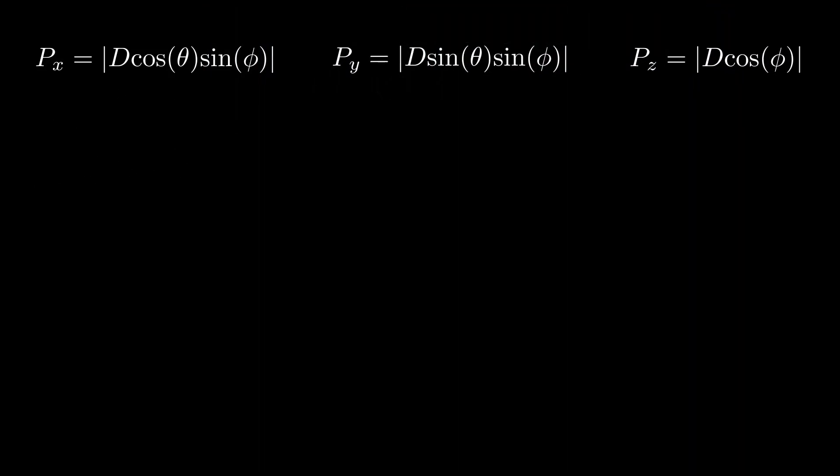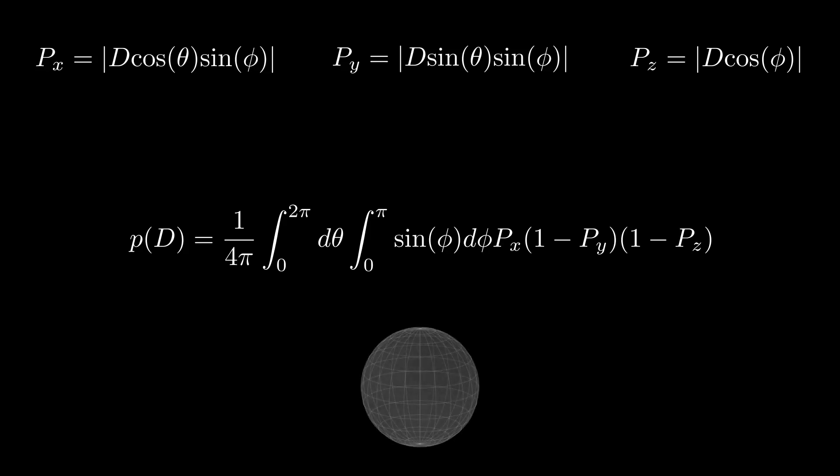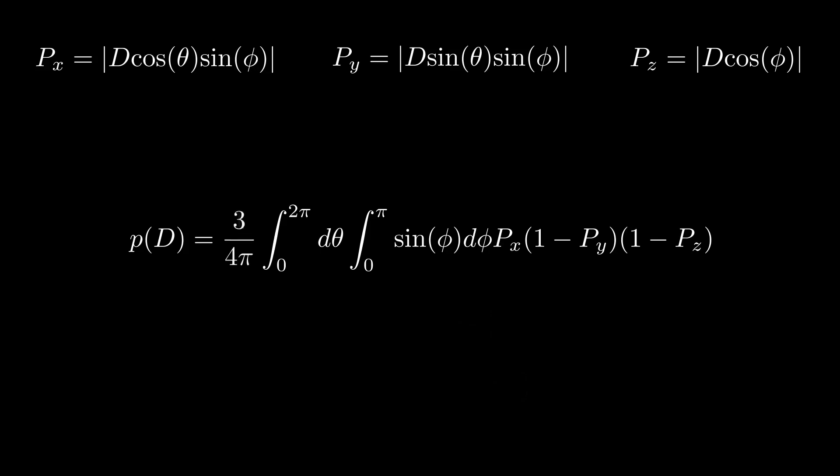Armed with the individual crossing probabilities for a given orientation, we can find the probability that we only cross a single plane, say, one constant in x. This probability is just the probability that we cross an x-plane times the probability that we don't cross a y-plane or a z-plane. And then all of this is averaged over all possible orientations. Here, the factor of sine phi takes into account that there are fewer orientations near the poles compared to the equator. We then multiply by 3, since we can have the single crossing happen with an x-plane, y-plane, or z-plane.